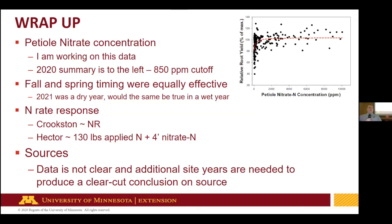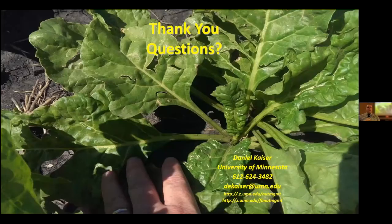Looking at petiole nitrate concentrations — about 850 ppm was a cutoff. Above that, we generally saw no increase in tonnage. Below that point, we were anywhere from about 40 to 100% in terms of tonnage response. Fall and spring were equally as effective, although 2021 was a dry year. I'm hoping we get a wet year in one of these years, because that's where things really tended to fall apart with fall application, and that'll help sort out between some of the sources. N rate response: at 130 pounds at one site that's kind of where we are. At Crookston, there was just no response with the lower yield potential. The source data — the jury's out on that right now. Hopefully with continued funding we'll have additional data.